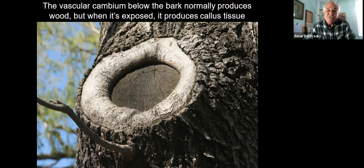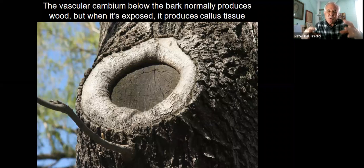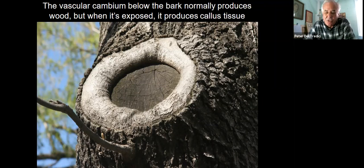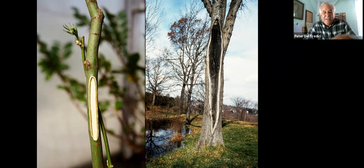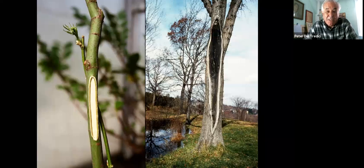When the cambium layer is exposed — like when you cut a branch off — that cambium layer, instead of producing wood, starts producing what's called callus tissue in an effort to overgrow the wound. You can see on the left-hand side where I was doing some grafting at the Arboretum on a Japanese maple — I went too deep, and you can see where the cambium layer was exposed, producing this callus tissue. You can see that on a large scale on this American elm that lost a big limb in a storm.